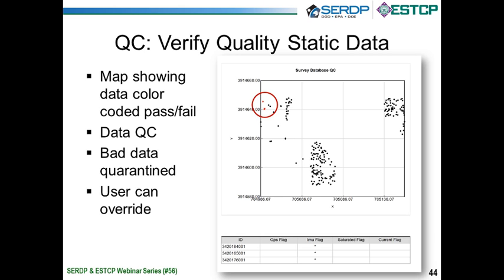This is a QC map for static data. As the data comes into the system, it is automatically evaluated during import. All problems are flagged and quarantined. In addition to the visual image showing which data collections were out of normal, we also save a detailed listing of error codes for the analyst to review, indicating which flags and error codes explain why particular data were flagged as bad.